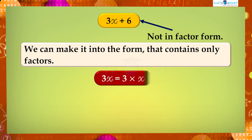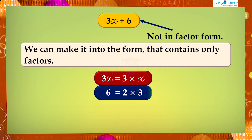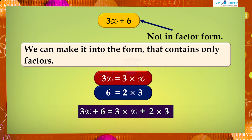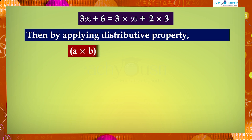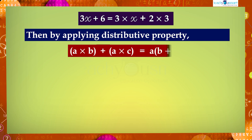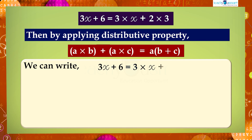3x can be written as 3 multiplied by x, and 6 can be written as 2 multiplied by 3. So 3x + 6 can be written as 3·x + 2·3. Here, 3 is common to both terms. By applying the distributive property — a·b + a·c = a·(b+c) — we can write 3x + 6 = 3·x + 2·3 = 3·(x + 2).